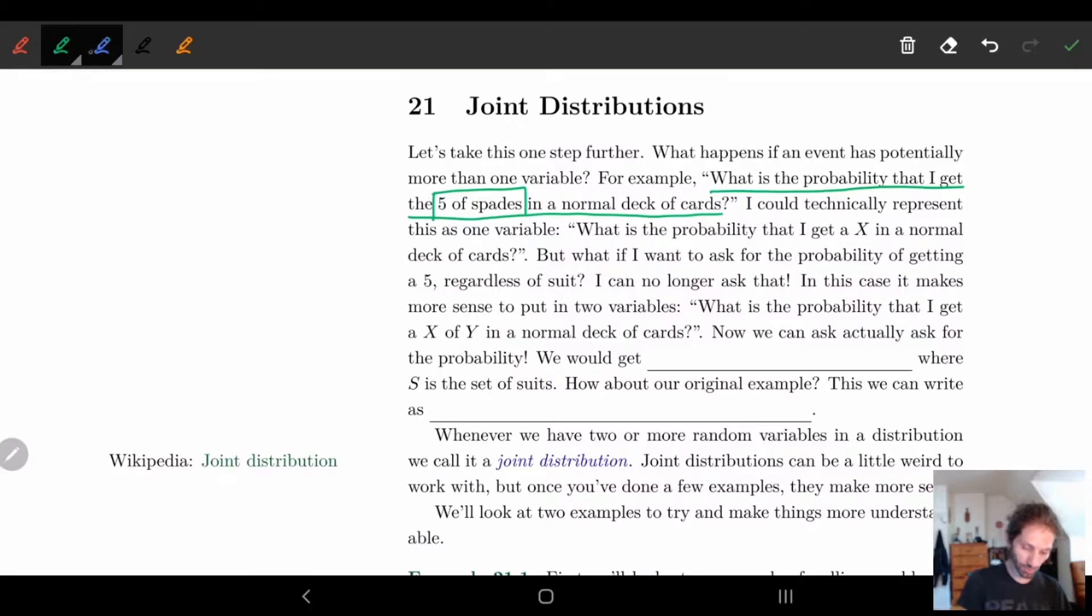So this is going to be restrictive. Instead, what we might want to do is say okay, make the number an x and the suit another variable y. And so what we'd end up with is what is the probability that I get an x of y in a normal deck of cards? Now we can ask these more general questions.